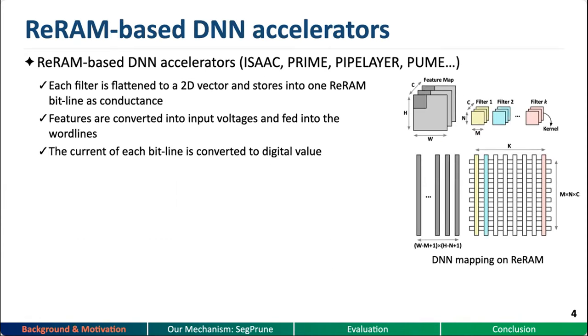Resistive random access memory, or ReRAM, is one of the emerging PIM devices. A ReRAM cell can store information through its programmable conductance. By applying a set of input voltages on the wordlines, the resulting current is the product of the conductance and the input voltage according to Ohm's law. Thus ReRAM is able to serve as both computing and storage units, especially enabling in-situ matrix-vector multiplication for convolutional and fully connected layers in DNNs in the crossbar architecture. In ReRAM-based DNN accelerators, each filter is flattened to a 2D vector and stored into one bitline as conductance.